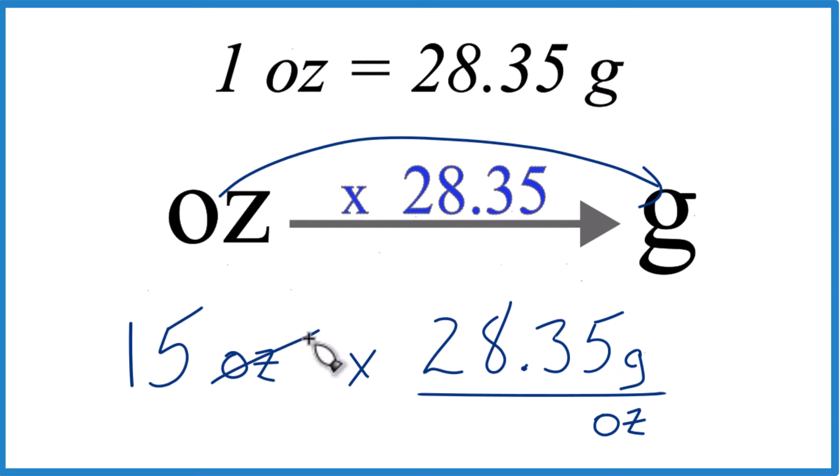That way when we multiply, ounces on the top and bottom cancel out. You're left with grams. You know you did it correctly.